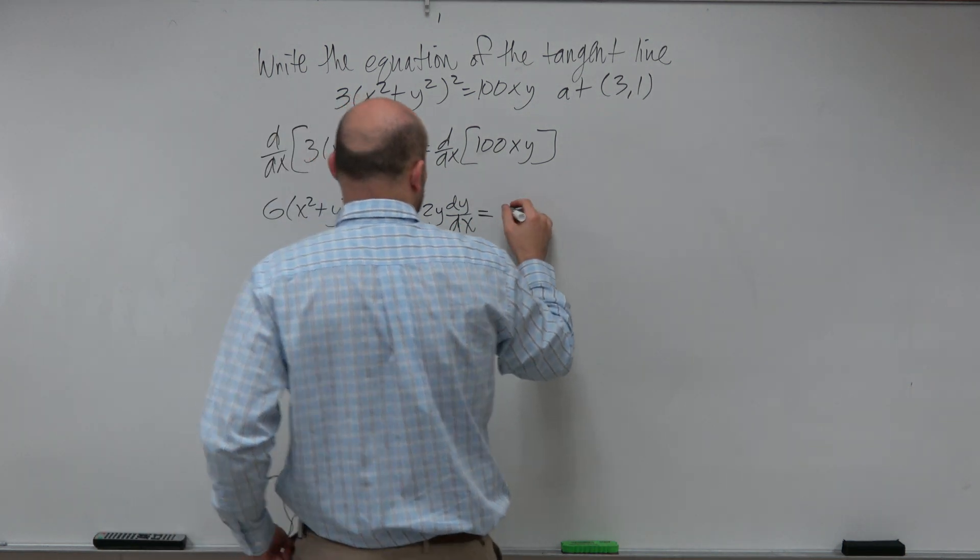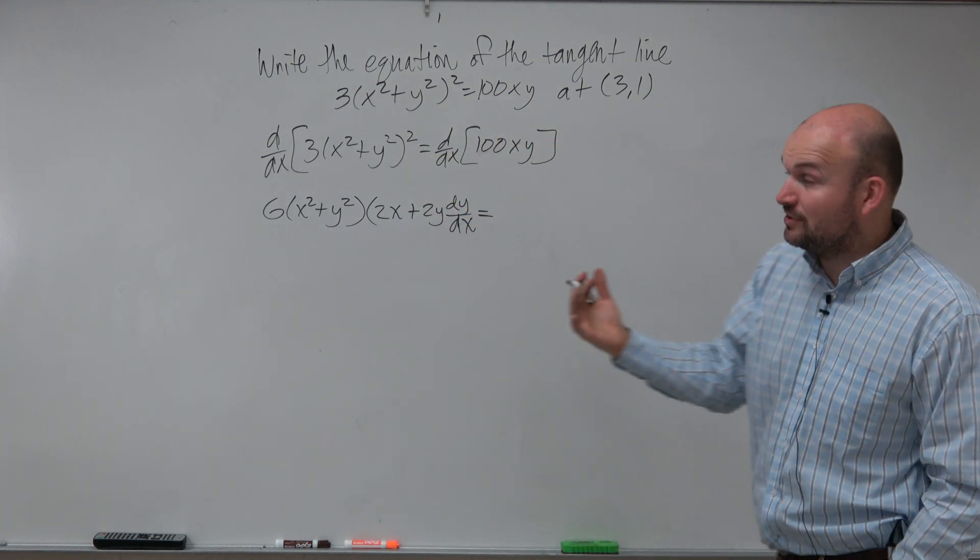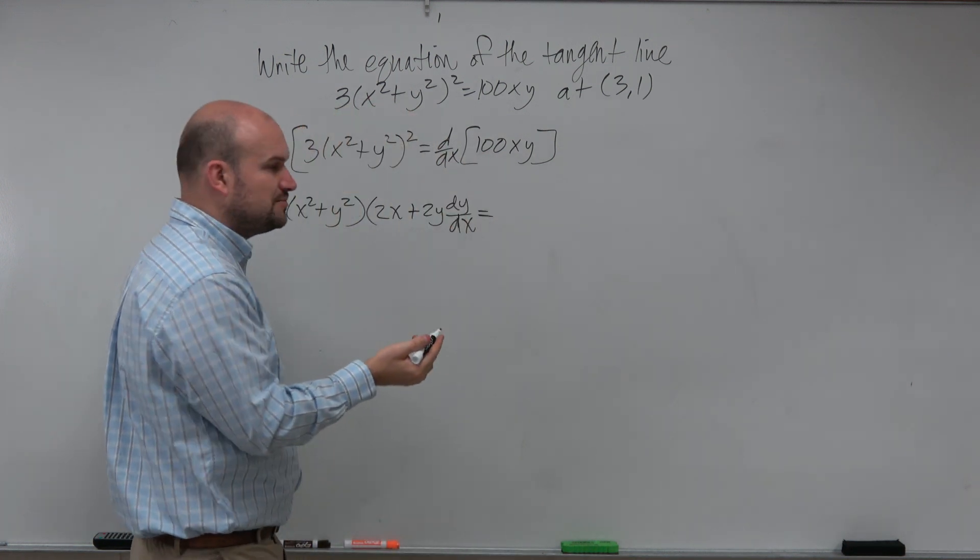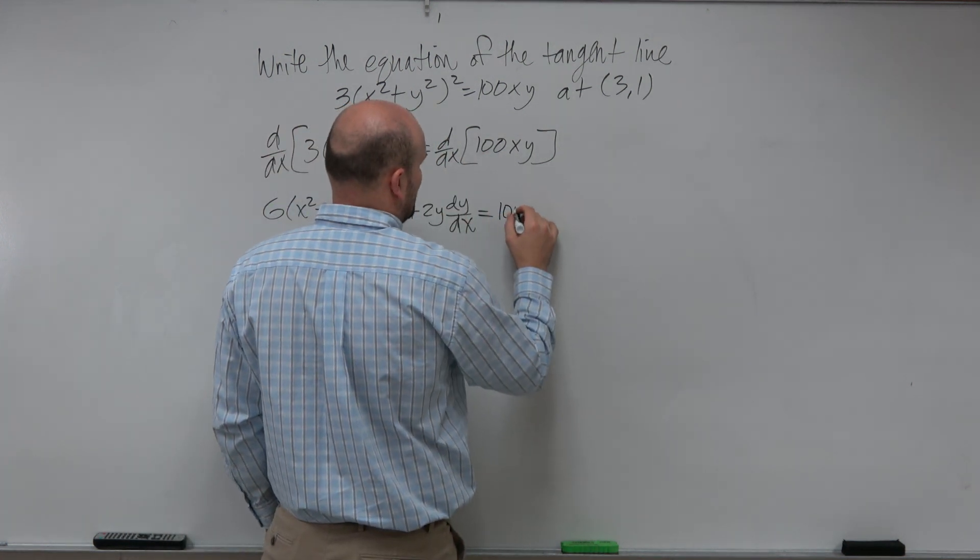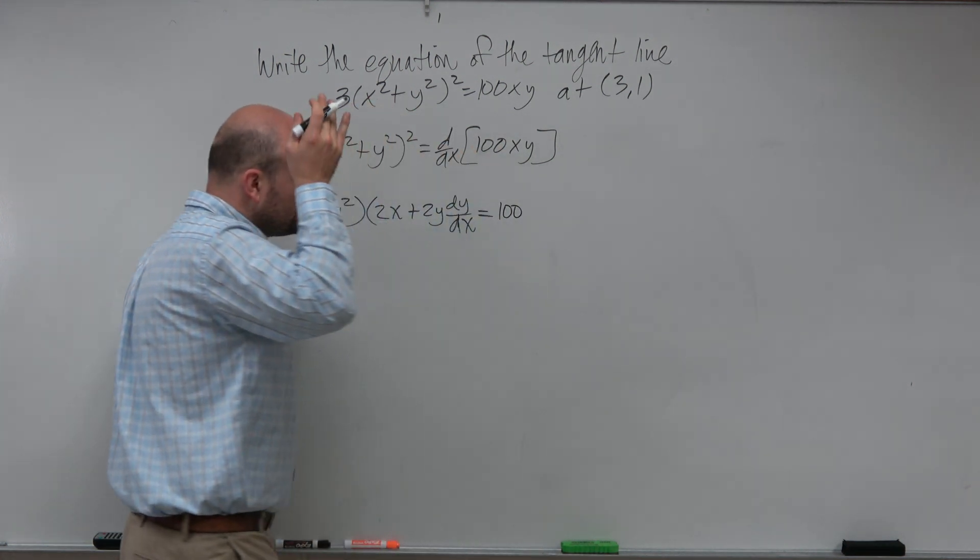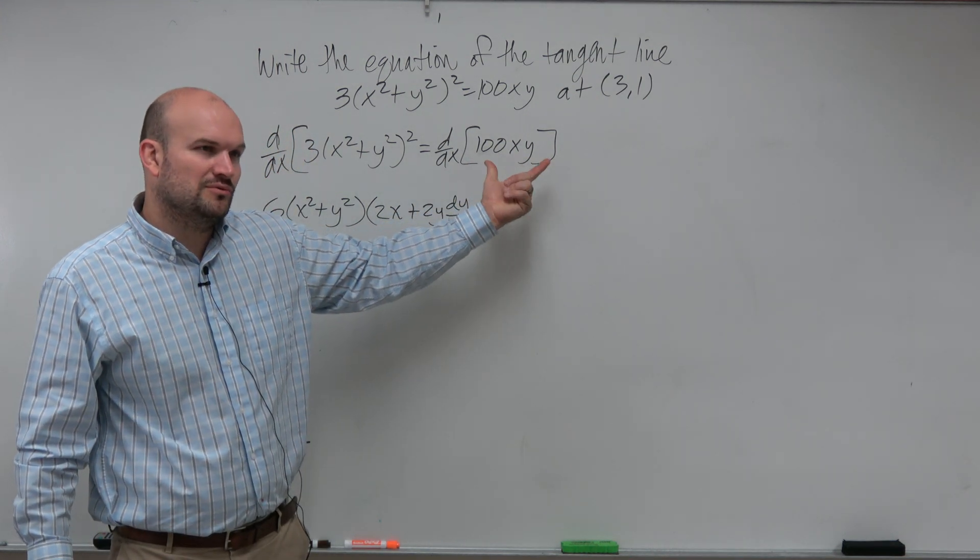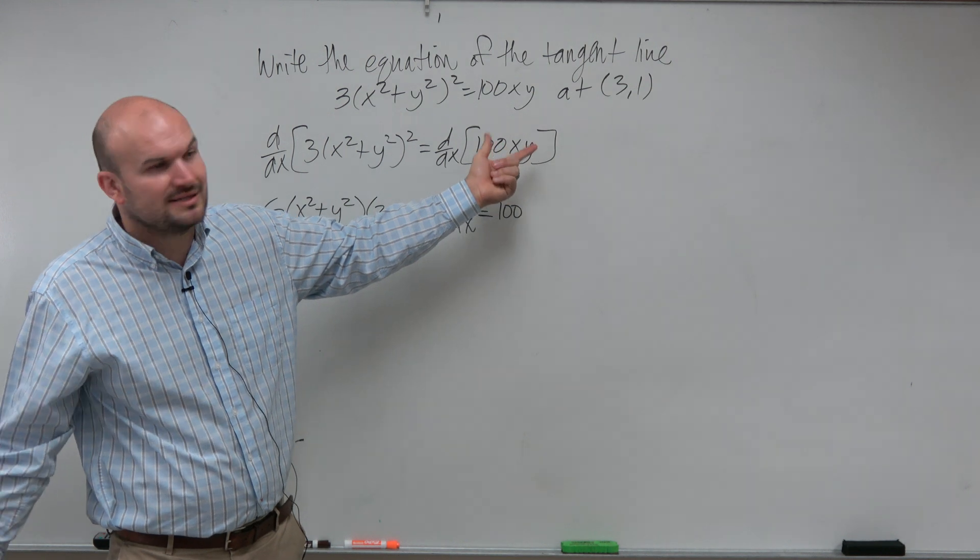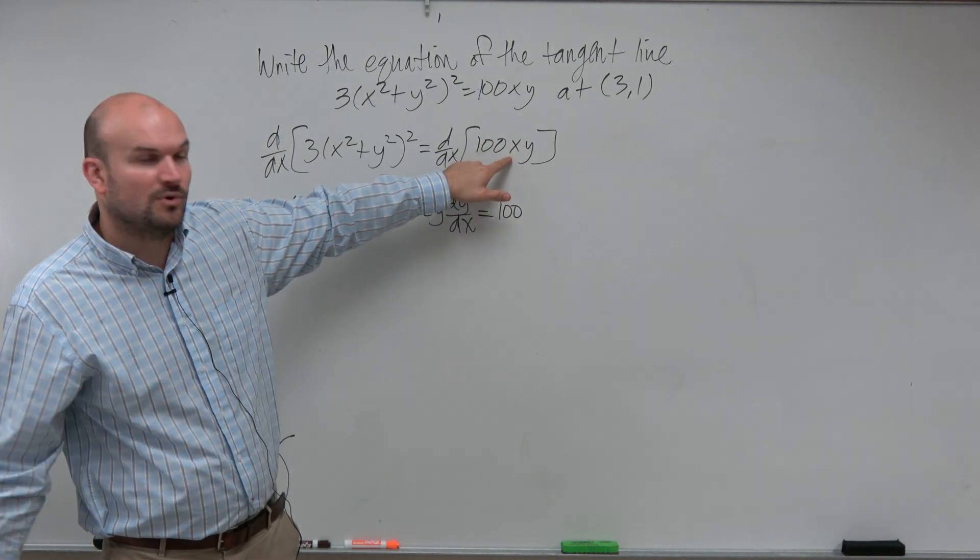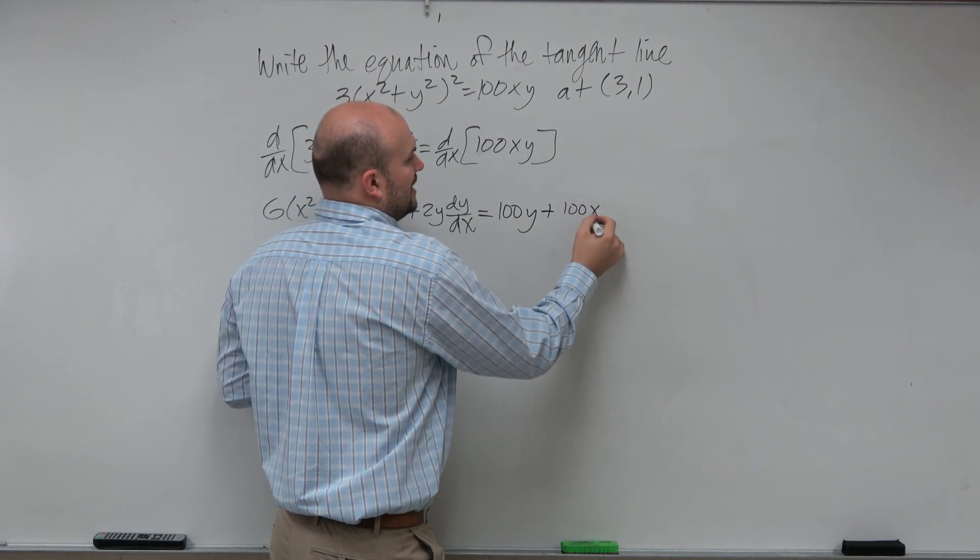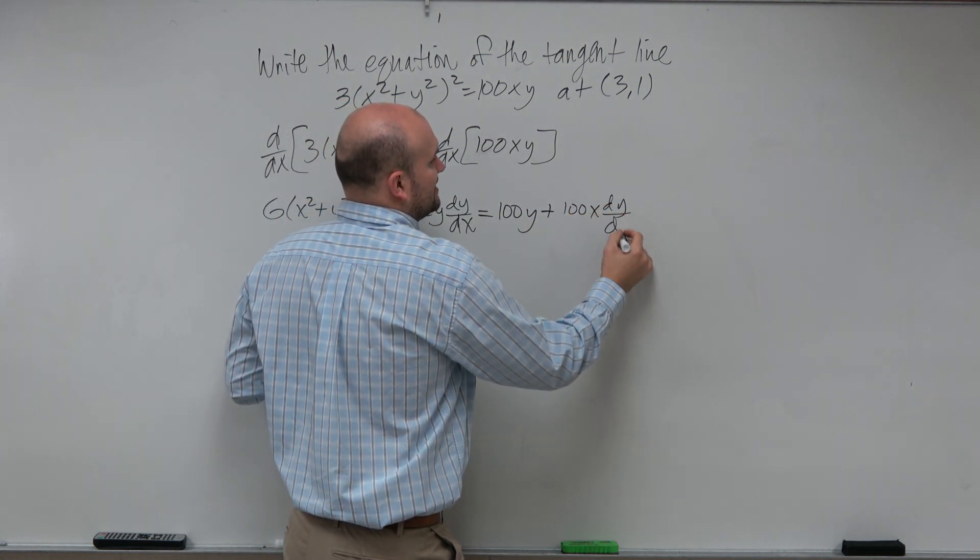And then d/dx here, I have to do the product rule. I can take the 100 out, or I can just leave it - I'm just going to leave the 100 as a coefficient in each one. And if it's okay with you guys, I'm just going to do the product rule a little bit more in my head, because when you have two linear terms, it's not that bad. Because the derivative of x is just 1, so that would be 100y plus 100x dy/dx.